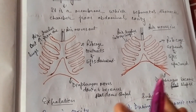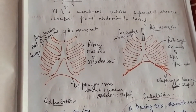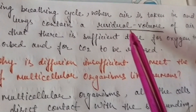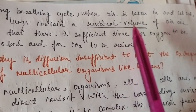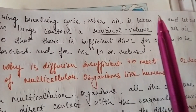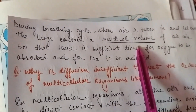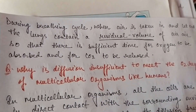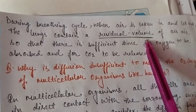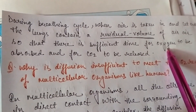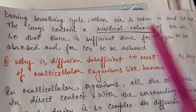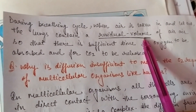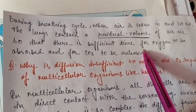During the breathing cycle, when someone breathes in or out, there is a residual volume in the lungs. Residual volume is the amount of air that remains inside the lungs after expiration. During the breathing cycle, when air is taken in and let out, the lungs contain residual volume of air so that there is sufficient time for oxygen to be absorbed and for carbon dioxide to be released.